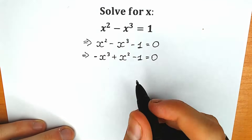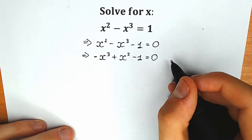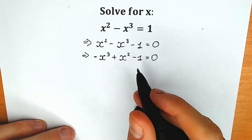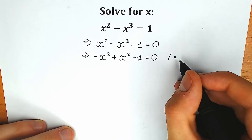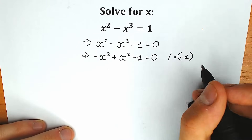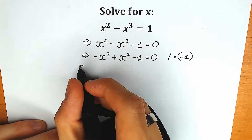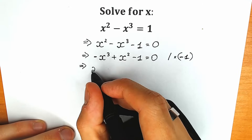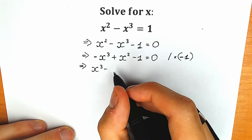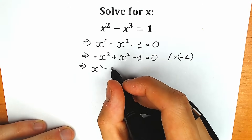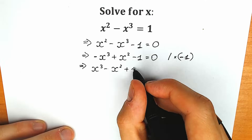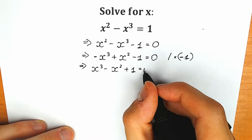The final step: let's multiply both sides by minus 1 because we don't need this minus in the beginning. So multiplying both sides by minus 1. As a result, our equation is going to look like x cubed minus x squared plus 1 equal to 0.